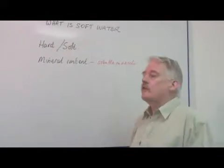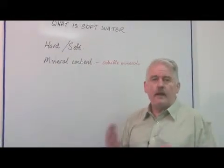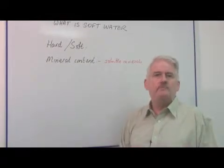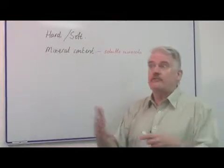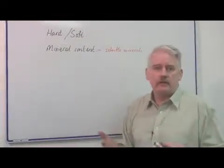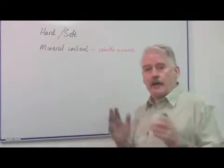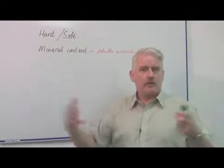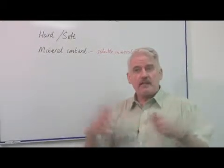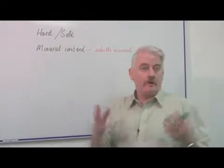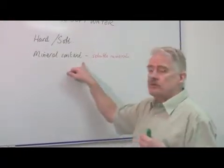We know that our water comes from underground, and while it is underground, it absorbs various soluble products which are found in the ground, in the earth and in rocks. And what happens, of course, if natural spring water comes to the surface, it comes to the surface having passed through various rock layers containing various minerals.